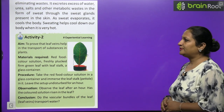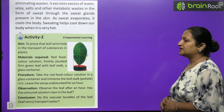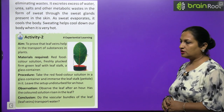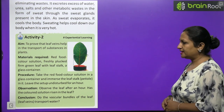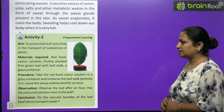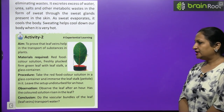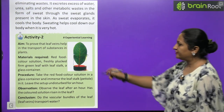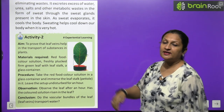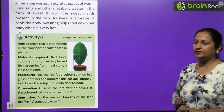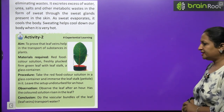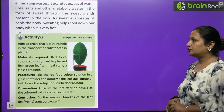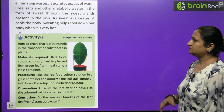Activity: to prove that leaf veins help in transport of substances in plants. Materials needed: red food colour, a freshly plucked firm green leaf with leaf stalk, and a glass container. Procedure: take the red food colour solution in a glass container and immerse the leaf stalk in it. Leave the setup undisturbed for an hour. Observation: the veins inside the leaf turn red, meaning the red solution has been absorbed by the leaf through its vascular bundles.